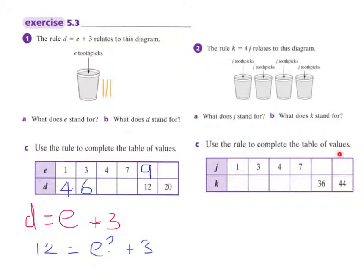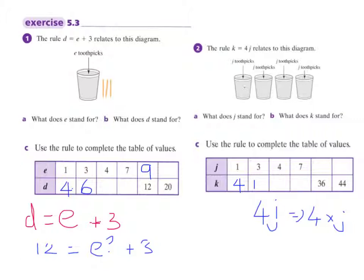Over here it says use the rule to complete the tables. The first thing I would write down is 4J. So this is my J. What does 4J equal? That's 4 times J. Or I could do it the long way: J plus J plus J plus J. But our short way of doing it is 4 times J. I imagine my J is 1, so I put 1 in there — 4 times 1, what's 4 times 1? It's 4. Then this is 3: I put my 3 in there, 4 times 3 — what's 4 times 3? That is 12. So I put my 12 in there.